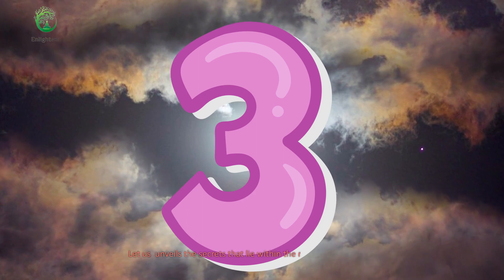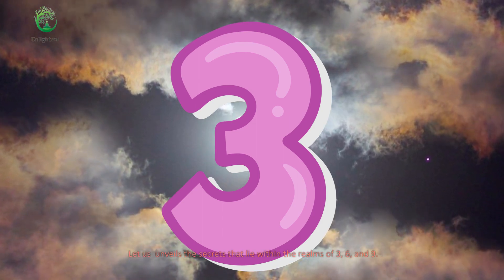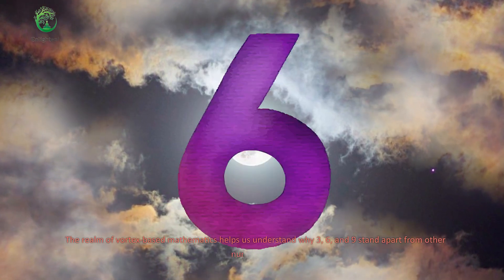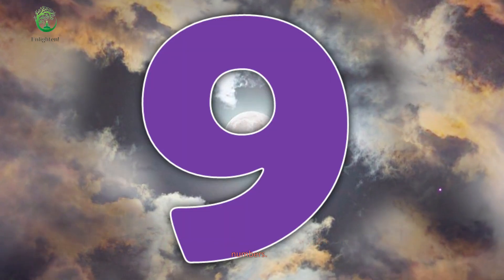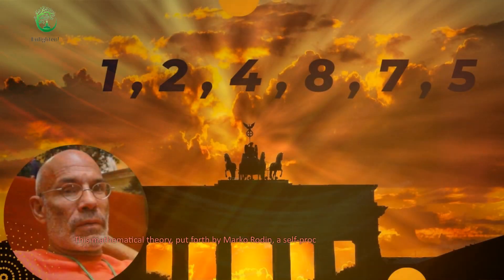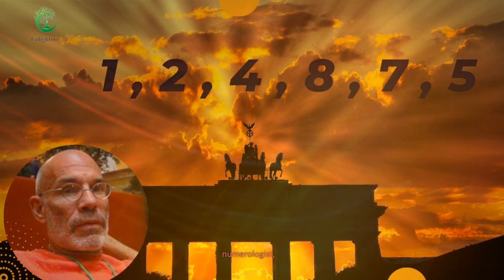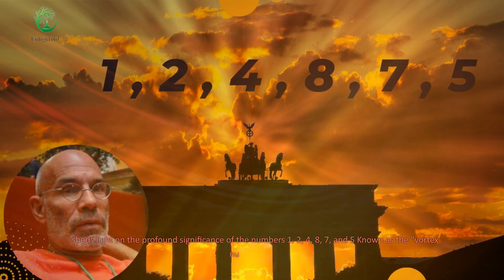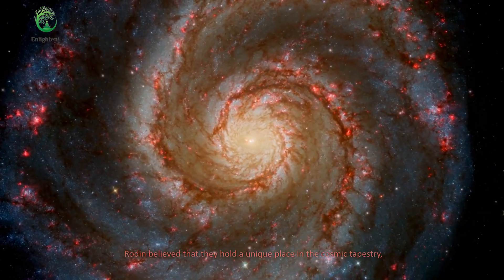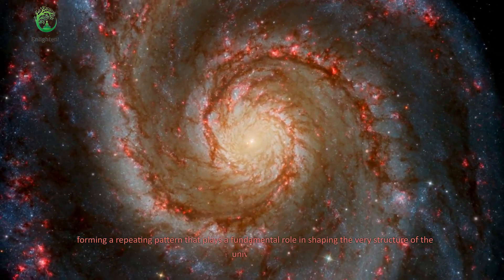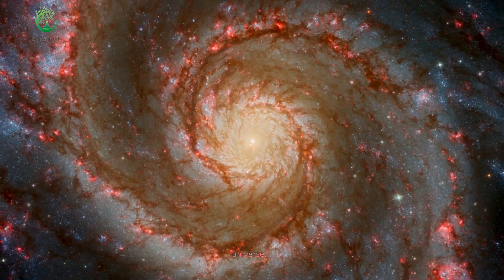Let us unveil the secrets that lie within the realms of 3, 6, and 9. The realm of vortex-based mathematics helps us understand why 3, 6, and 9 stand apart from other numbers. This mathematical theory, put forth by Marco Rodin, a self-proclaimed natural philosopher and numerologist, sheds light on the profound significance of the numbers 1, 2, 4, 8, 7, and 5, known as the vortex numbers. Rodin believed that they hold a unique place in the cosmic tapestry.